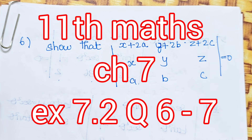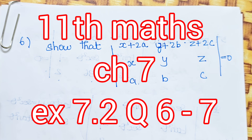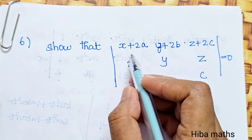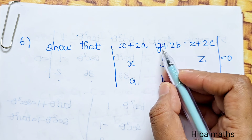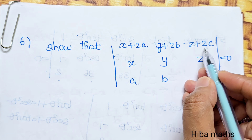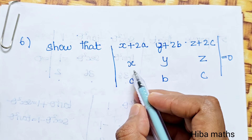Hello students, welcome to Hiba Max 11 Standard, Chapter 7, XA 7.2, 6th question. If we solve it, then show that the determinant with first row x plus 2a, y plus 2b, z plus 2c is equal to 0.